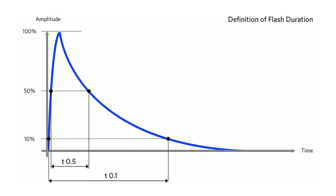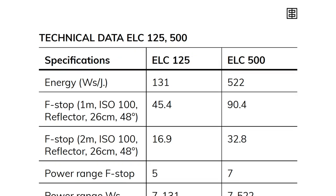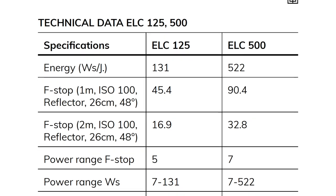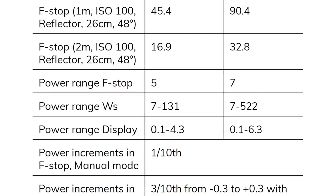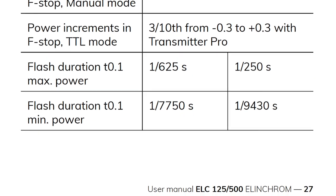You can see this relationship on a graph created by Sekonic. T.1 numbers are far more useful than T.5 numbers because they more fully represent the information, but unfortunately there isn't a formula to convert T.5 specs to T.1. If you're interested in finding the flash duration specs for your flash, please consult your manual.